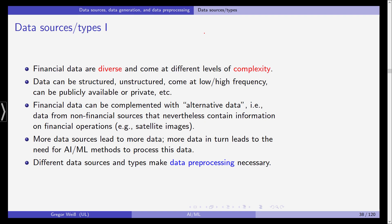Now if we start with financial data, even financial data are quite diverse - they come at different levels of complexity and can be about prices, indexes, transactions, and so on. The data can be structured or unstructured, and come at low frequency or high frequency. Sometimes we have prices available only once a week.